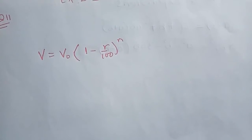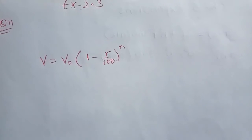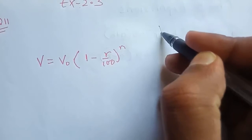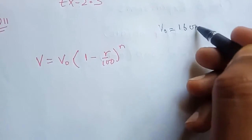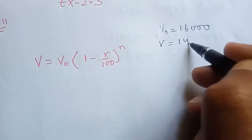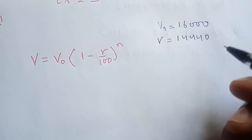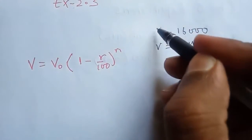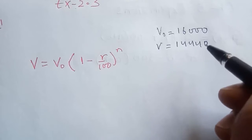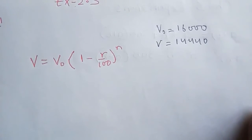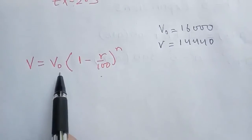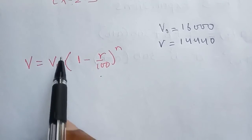Afzal purchased an old motorbike for rupees 16,000. So V₀ equals 16,000 and V equals 14,440. Depreciation is taking place — the value was previously 16,000 and it's going down over 2 years. So since it's down 2 years, we'll use the depreciation formula. This is the value N years ago; I'm talking about 2 years before.